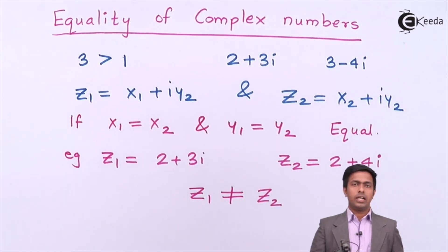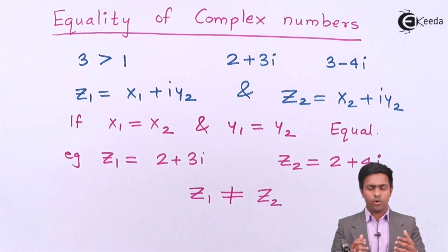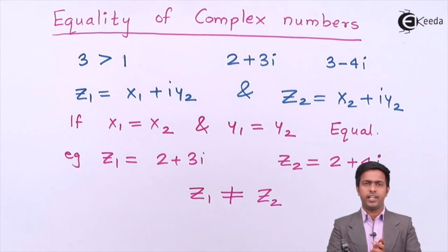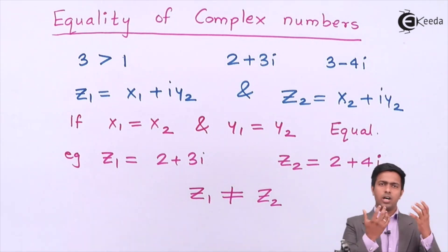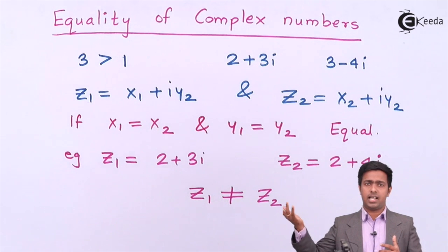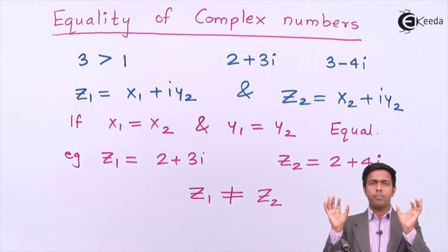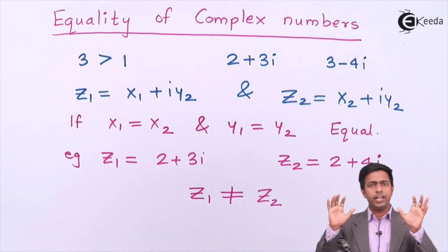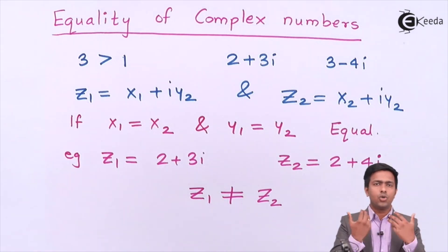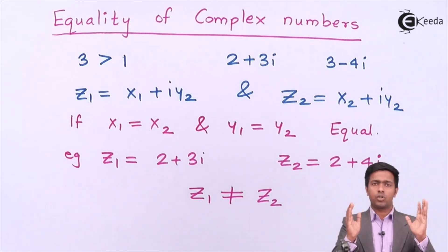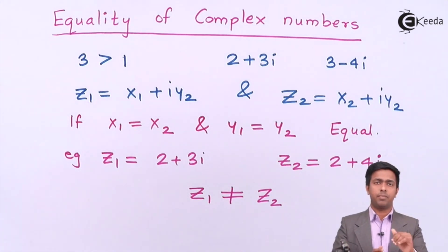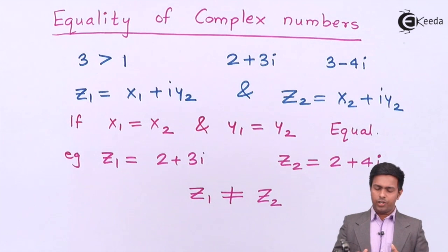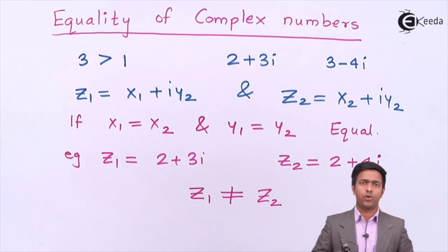This is all about the equality of complex numbers. We are going to use this concept while solving many numericals where we assume the given complex number as x + iy. Whenever we put an equal sign between any two complex numbers, it is assumed that the real parts of both are equal as well as the imaginary parts are equal. We'll use this concept to solve further numericals. Thank you very much.